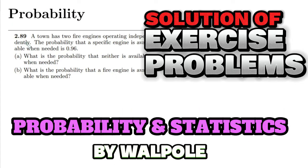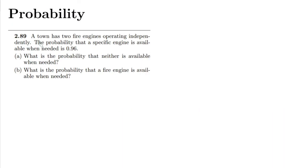This is question 2.89. The statement is: a town has two fire engines operating independently. The probability that a specific engine is available when needed is 0.96. So we have two engines, and the probability of availability for each engine is 0.96, and both of them are independent.